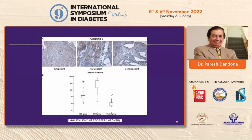Caspase-3, responsible for cell destruction, was heavily stained in the middle panel but markedly diminished with insulin infusion. So insulin is not only a vascular hormone but a myocardial hormone as well. The myocardium is an evolved part of the blood vessel itself, and insulin has diffuse actions in vasodilatation, anti-inflammation, and protection of the myocardium from infarction.